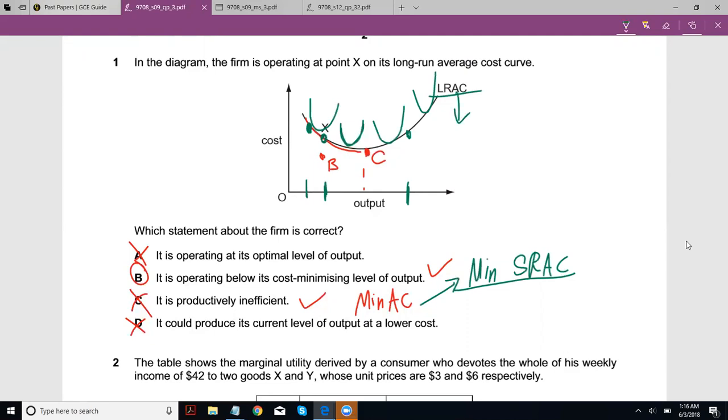But the point here is the LRAC curve will always be below, you know, it would always be below or equal to the SRAC curves. Which means at a particular output, the point that the LRAC curve shows you is the minimum cost you can produce that particular output for.